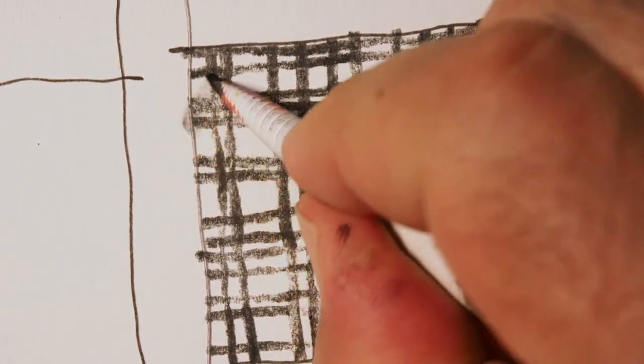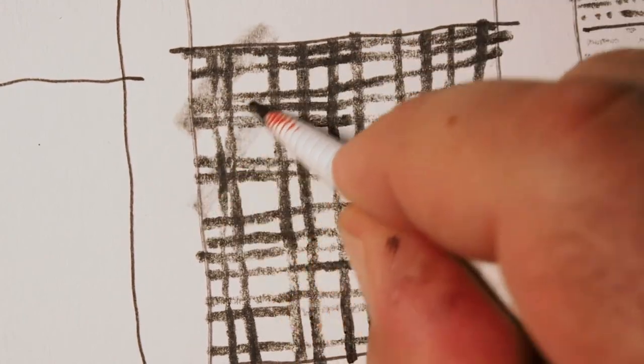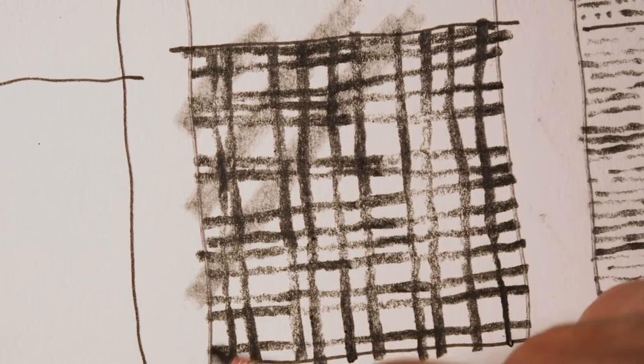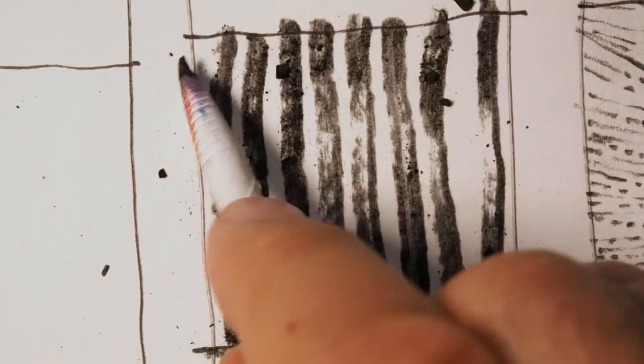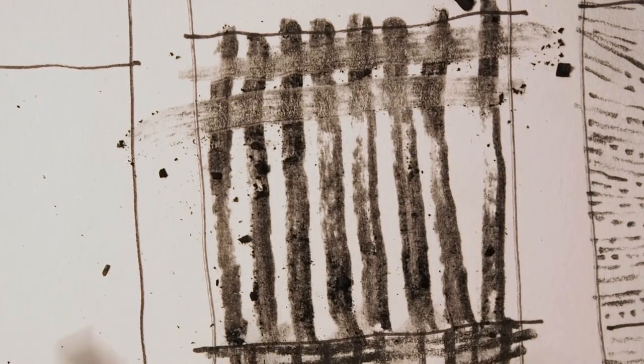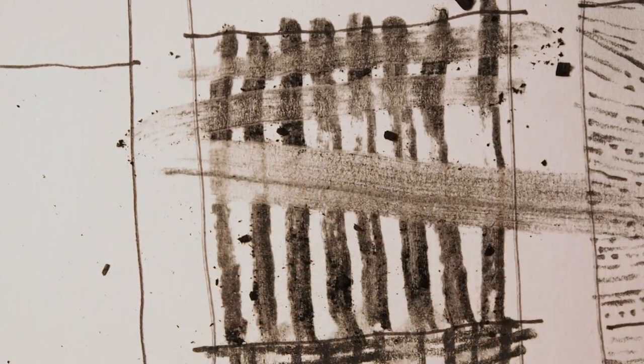This is charcoal pencil smudging. The charcoal pencil is actually very hard, and the one that I used anyway, and it doesn't exactly smudge. This is vine charcoal, and it smudges really easily.